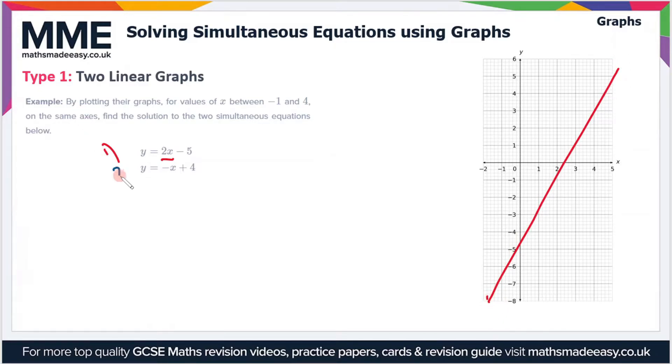And then for the second one, so that's y equals minus x plus 4, so that means it crosses the y axis at plus 4 and it's a gradient of minus 1 which means that for every one square you go across you go down 1 as well. So if you line everything up, draw the line, it should look something like this.